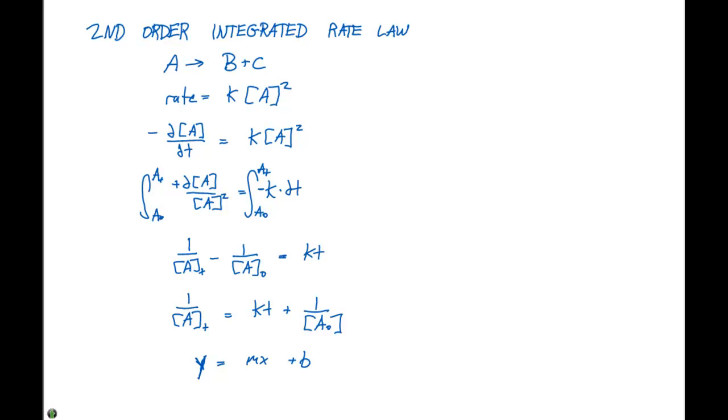And when we go to plot this now, we're going to plot 1 over the concentration of A on the Y axis and time on the X axis. When this happens, we're going to get a slope that's equal to K. And our Y intercept or our B is going to be 1 over A naught.